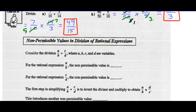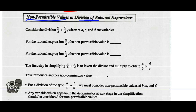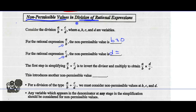Now, before we move on to rational expressions, there are some rules for the non-permissible values when we talk about division of rational expressions. Let's consider the division of A over B divided by C over D, where A, B, C, and D are all variables. For the rational expression A over B, the non-permissible value is B — so B can't equal 0. For the rational expression C over D, the non-permissible value is D — so D cannot equal 0.